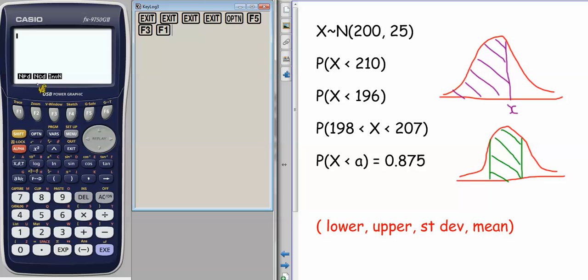The two things we're going to use are NCD and INVN. The INVN allows us to go backwards in the table, so it's the inverse normal. We put in a probability, it tells us the Z value that corresponds. The NCD gives us the probability, so that's going forwards in the table.